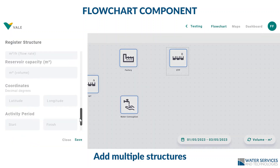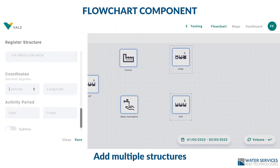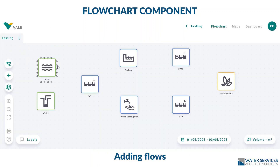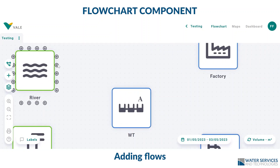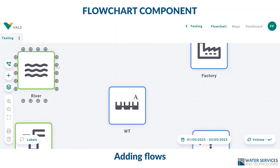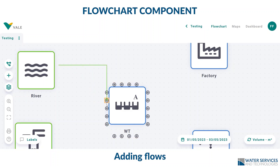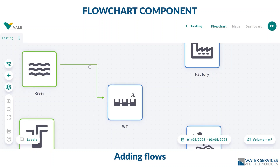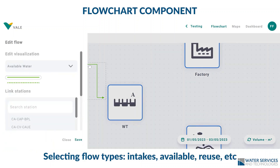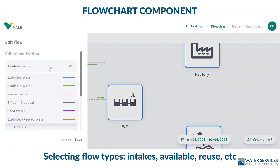You can then repeat the process to enter multiple structures to reflect your mapped water circuit. Once all structures are in place, it is time to add flow lines indicating where the water comes from or goes to for each structure. You do this by simply dragging and dropping flow lines connecting each structure that you want. You can select the flow types — whether it is an intake, effluent disposal, reuse water, etc.